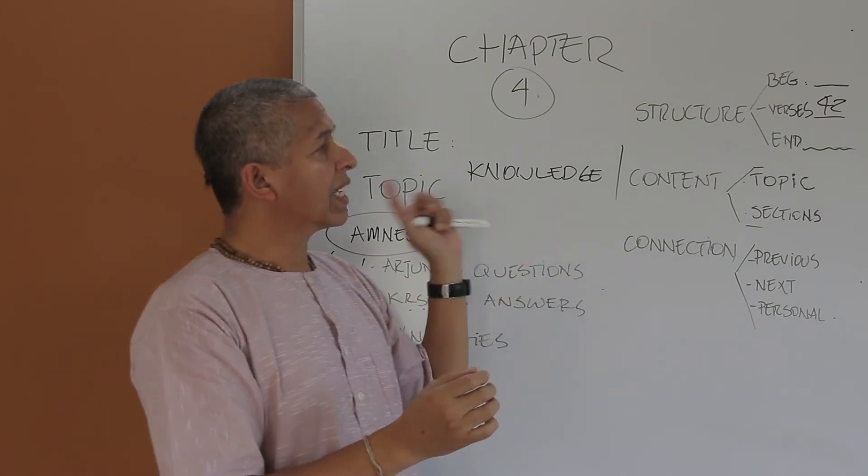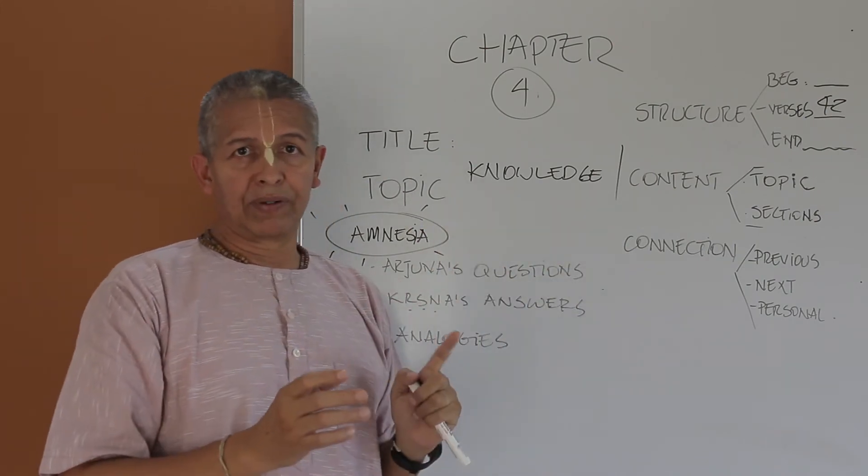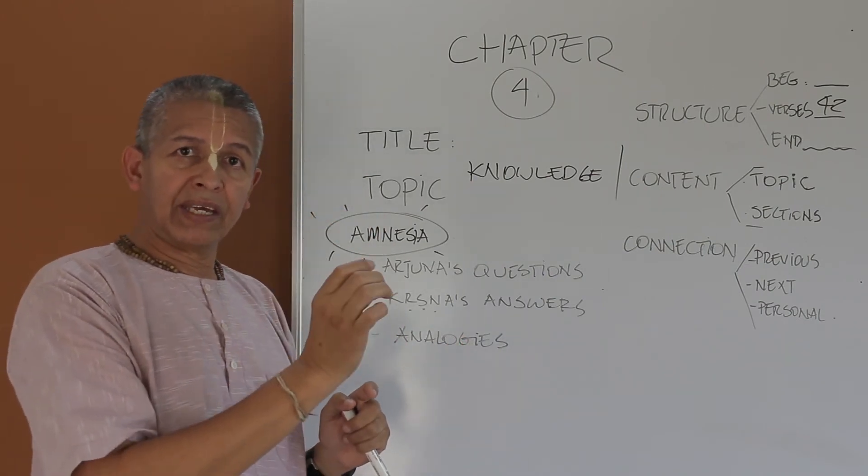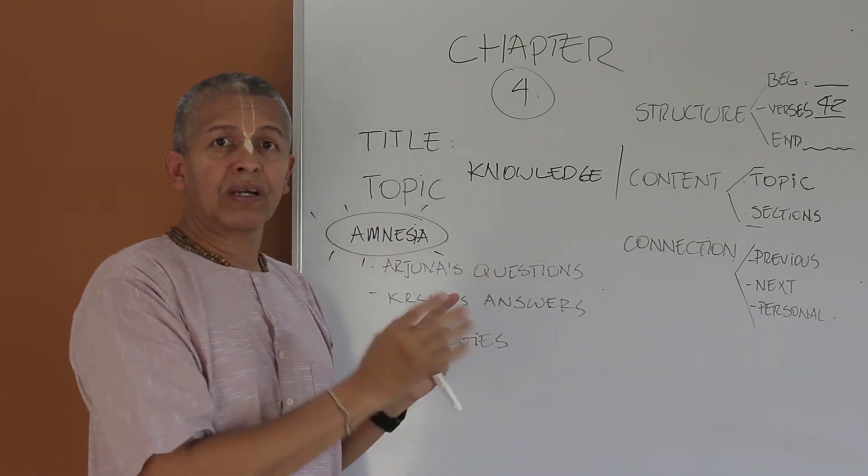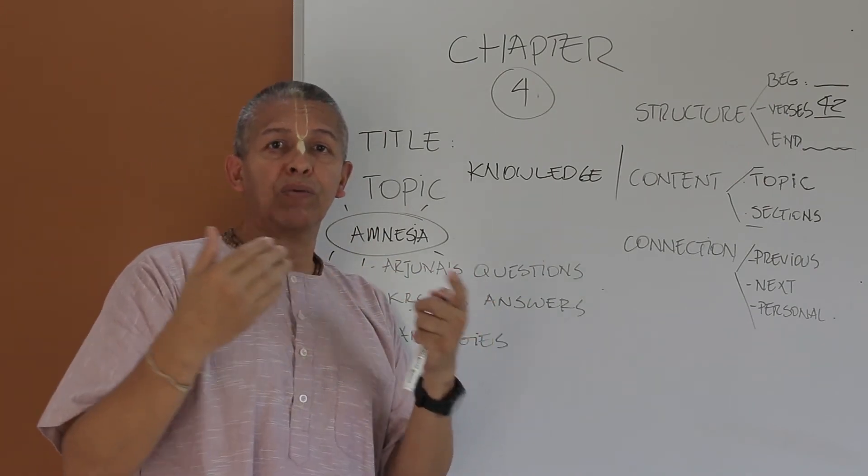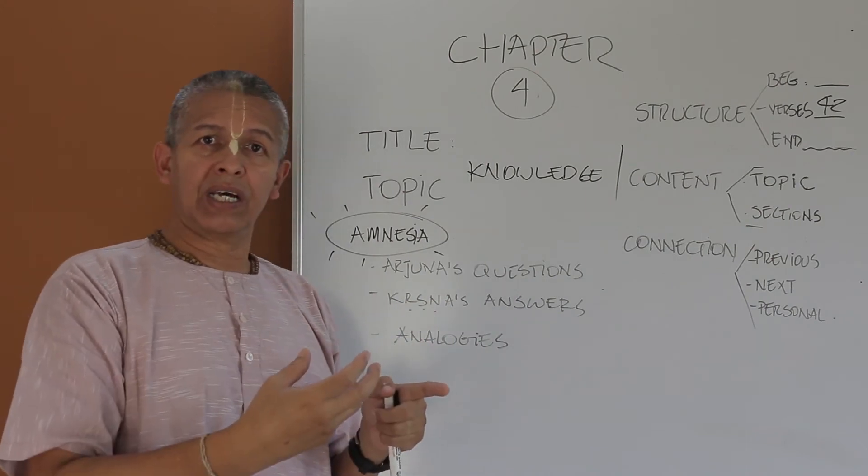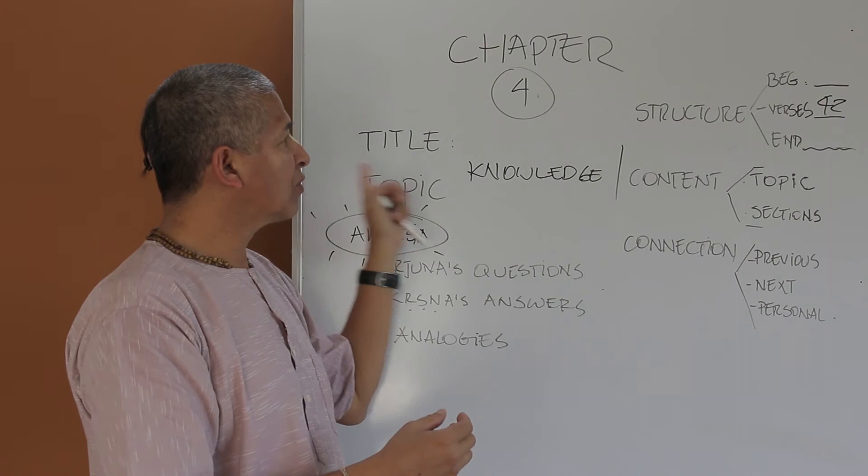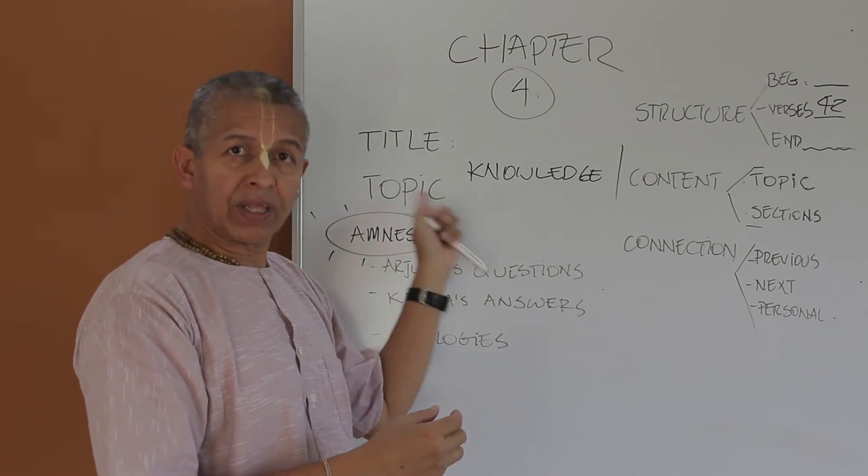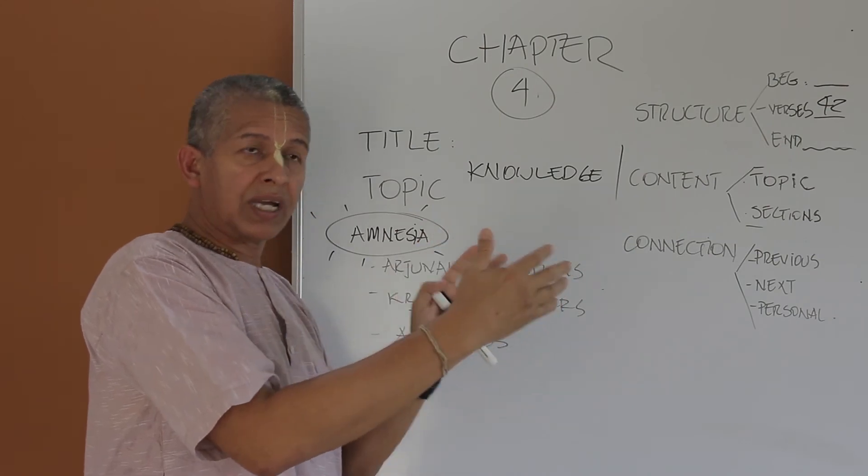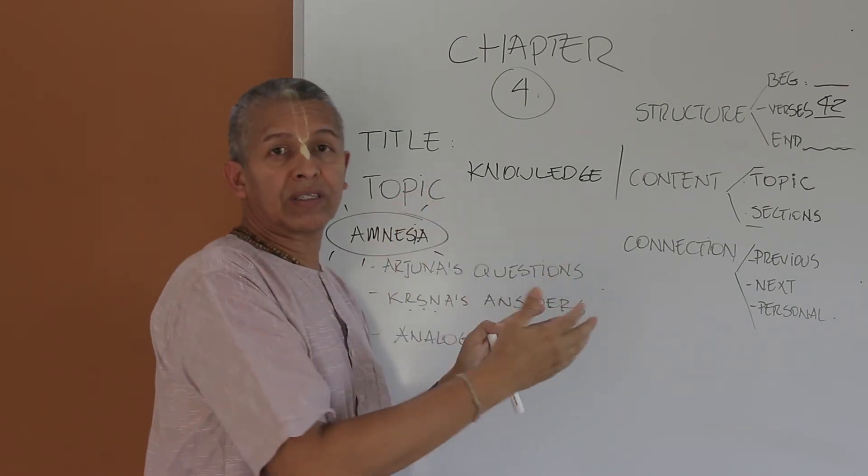Now the connection is quite clear with the previous chapter. The previous chapter is called Karma Yoga. And Prabhupada explains that in this particular chapter, Buddha Yoga will be explained. Buddha Yoga means acting with knowledge, working with knowledge. That's what's the reference. So that's the clear connection, how to work with knowledge, how to apply chapter 3 which is referring to work, how to work with knowledge for Krishna.